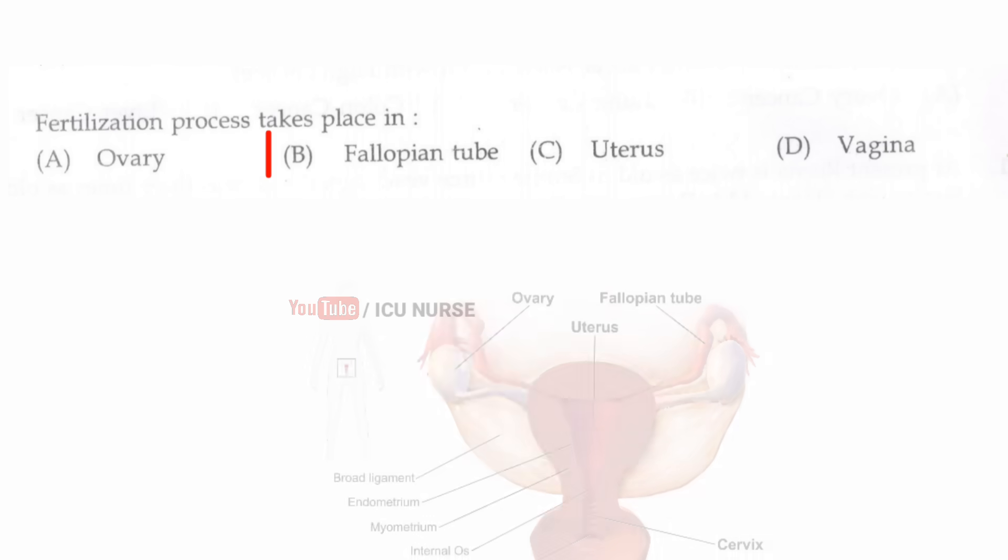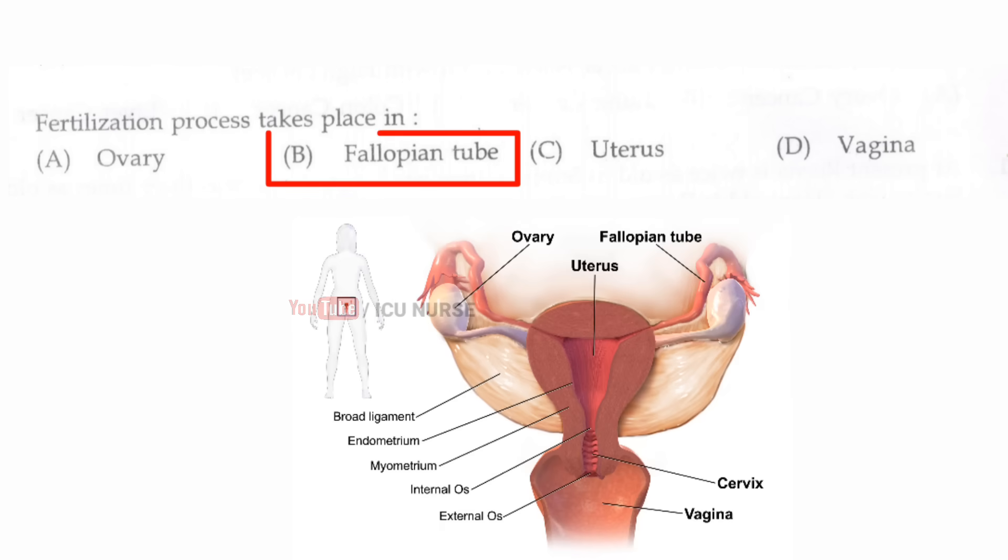Fertilization process takes place in — the correct answer is B — the fallopian tube.